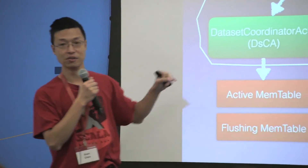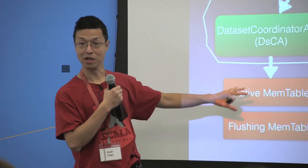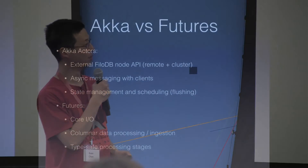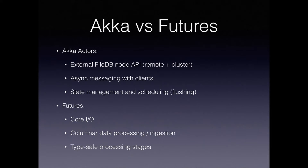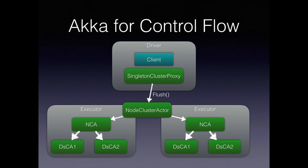We use Akka for two things: managing state and handling remote connections — for example, clients writing data in through Akka. Each node has state like a mem-table. Scheduling is another thing Akka is really good for — for example, flushing data after a certain period of time using Akka's built-in scheduler. For async messaging, handling state, making sure state doesn't leak — Akka is really good at all of that. When we send a control flow message, every Spark application has a driver and workers called executors.